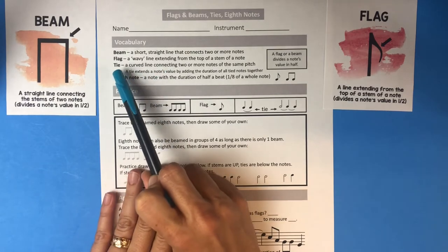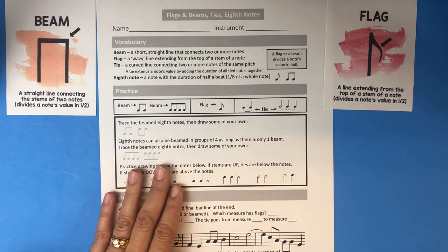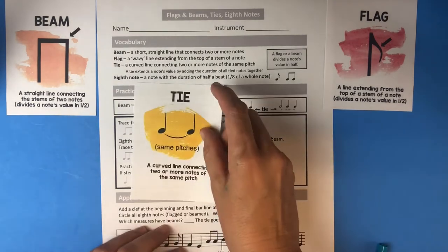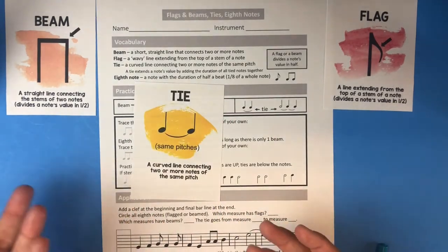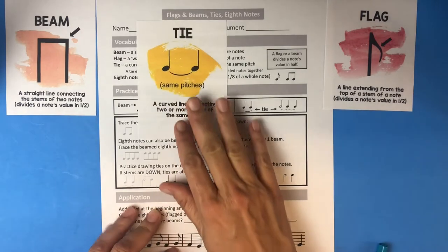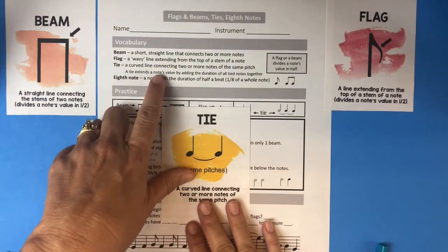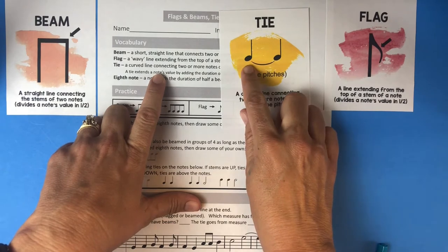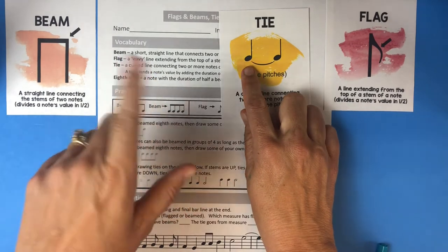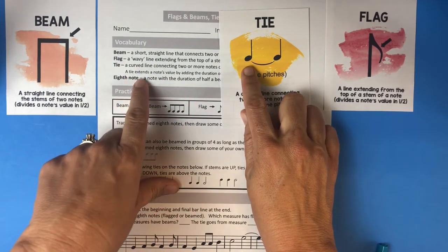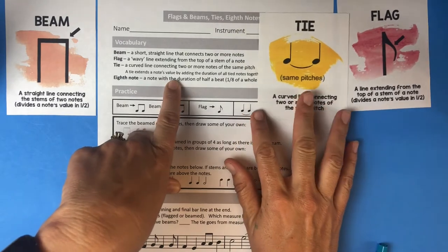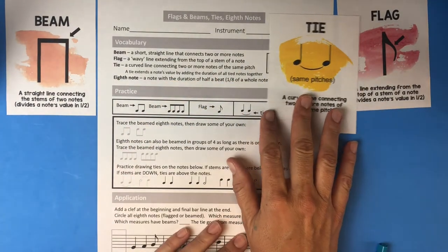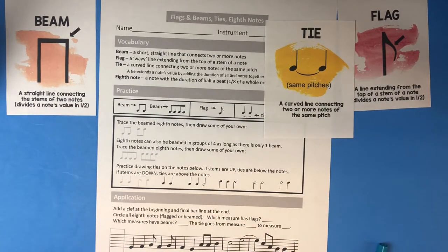The next thing to talk about is a tie. The reason I have these together is because they all adjust a note's value. A tie does that also. It's a curved line connecting two or more notes of the same pitch. A tie extends a note's value by adding the duration of all tied notes together.